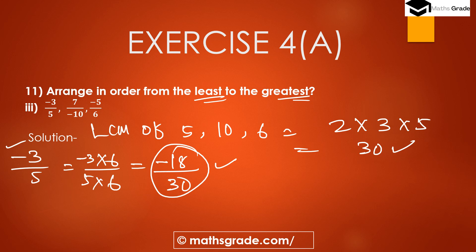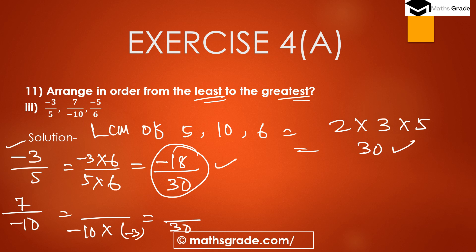Convert 7/(−10) into an equivalent rational number. Multiply denominator −10 by −3 to get 30 (negative × negative = positive). Multiply numerator 7 by −3: 7 × 3 = 21, so it becomes −21. Therefore −21/30 is the equivalent rational number of 7/(−10).